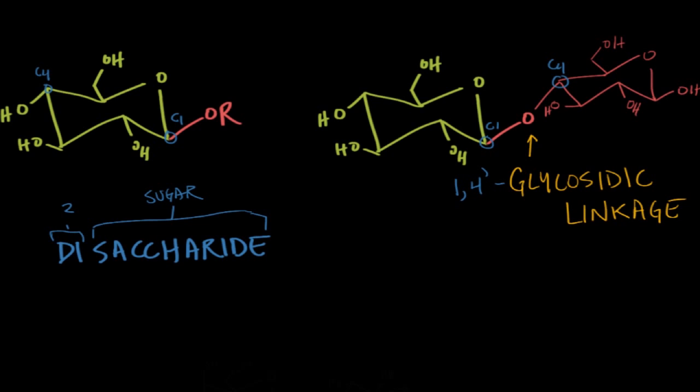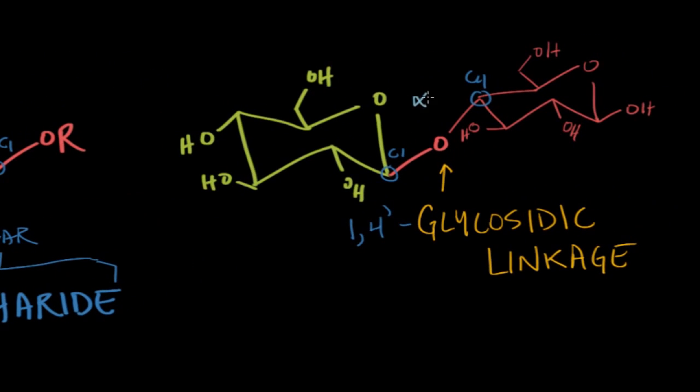Just like we could further break down our monosaccharides into alpha and beta based off the orientation of the anomeric hydroxyl group, we can more specifically call the 1,4 linkage an alpha or a beta linkage, based off the orientation of the OR group on the anomeric carbon.